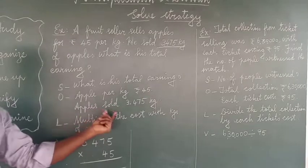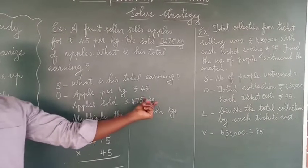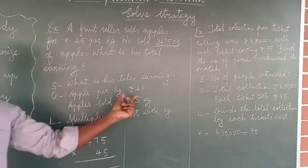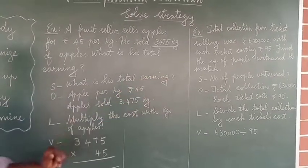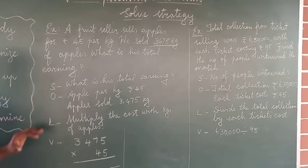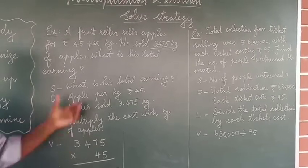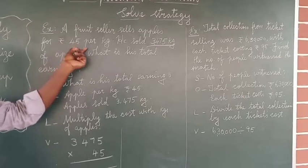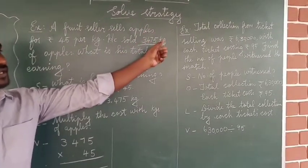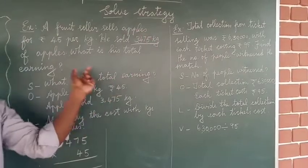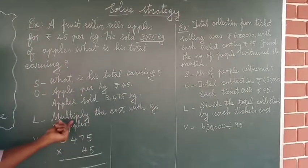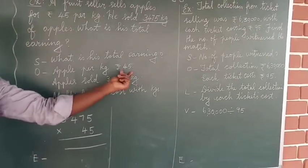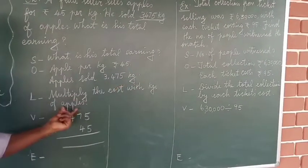O — organize the data: apple per cage is sold for rupees 45; apples sold — three thousand four hundred and seventy-five cages. L — line up the action plan: one kg is 45 rupees, so for three thousand four hundred and seventy-five kilograms the operation should be multiplication.